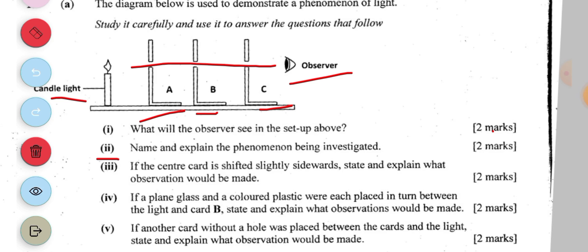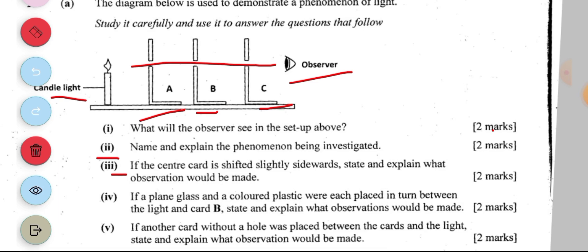If the center card is shifted slightly sideways, that's the one in the middle shifted slightly sideways, state and explain what the observation would be. When the center card is shifted, the observer will not be able to see the candle light. The explanation is that there is no space for the light to pass through. Light cannot travel through the structure, and light also cannot be bent, so the light rays will be blocked.